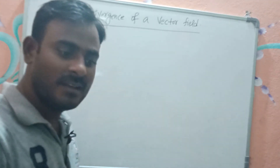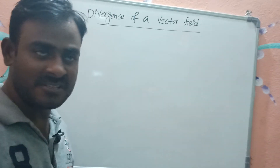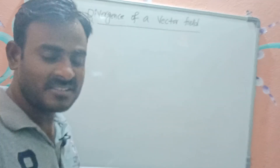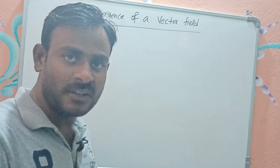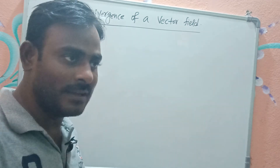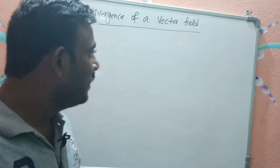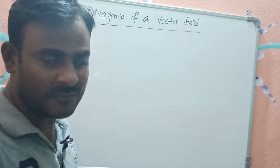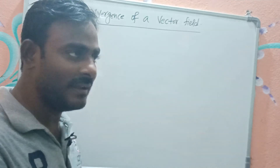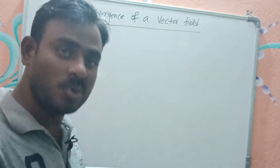Hi friends, in this video we will see how to find the divergence of a vector field. In the last video we have seen how to find the gradient of a scalar function, which always yields a vector value. Now we'll see how to find the divergence of a vector field in different coordinate systems by taking a small example in each coordinate system.